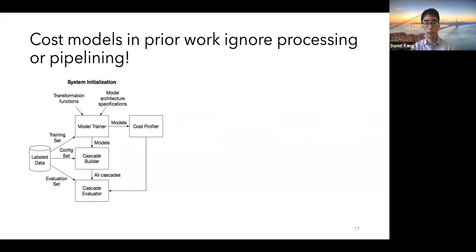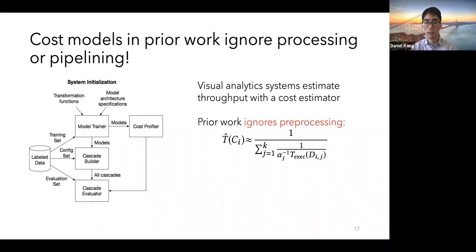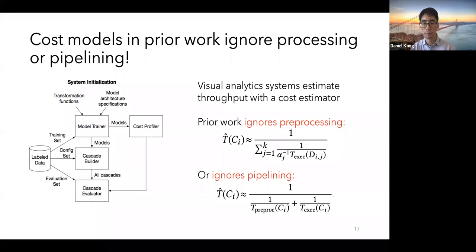If we look at cost modeling of prior work, it unfortunately ignores either pre-processing or pipelining. Specifically, these cost estimators use the inverse sum of the inverse throughputs of just the deep neural networks or ignore the fact that pre-processing and DNN execution can be pipelined when using accelerators. And as we'll show in the evaluation, this can lead to suboptimal query plans.